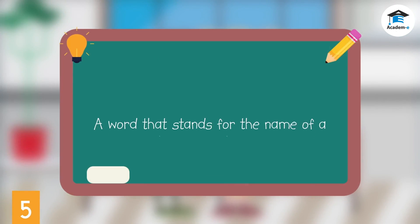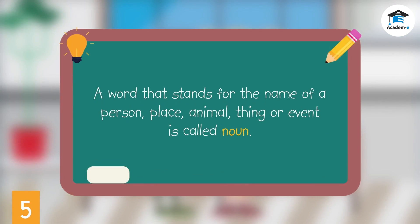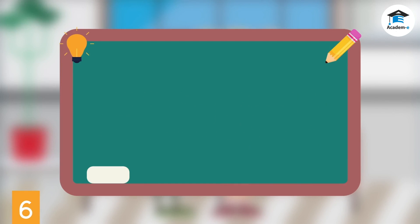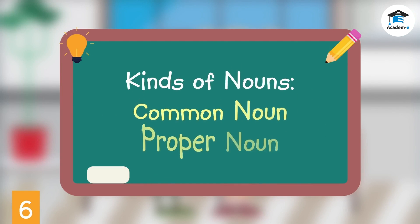A word that stands for the name of a person, place, animal, thing, or event is called a noun. There are two kinds of nouns: common noun and proper noun.